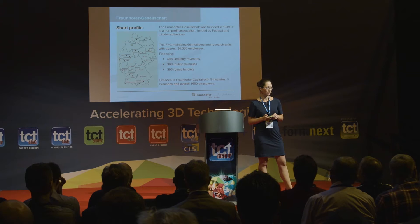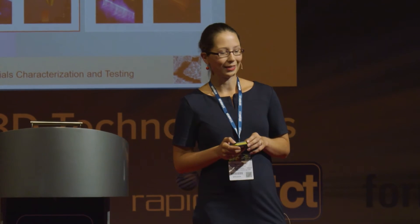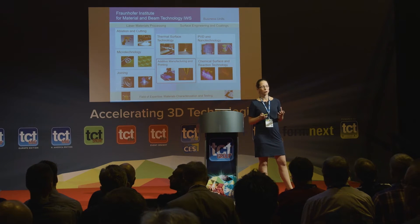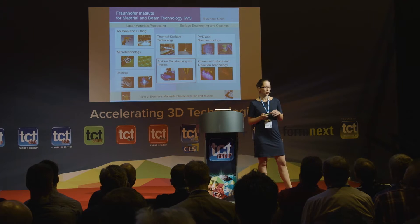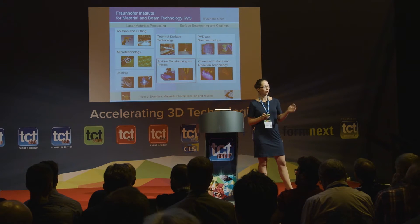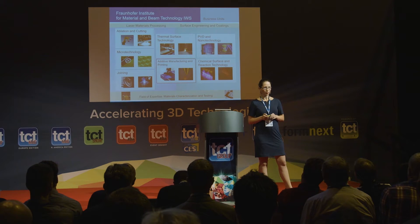Dresden considers itself the Fraunhofer capital, with five institutes situated there, and we work closely together with the University of Technology — it's a research hub with over 1,650 Fraunhofer employees alone. At our institute we focus on laser materials processing, surface engineering and coatings, and additive manufacturing and printing, which was founded in 2014 when the huge potential became clear.